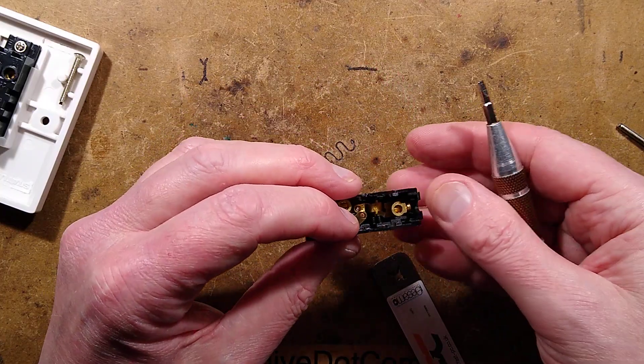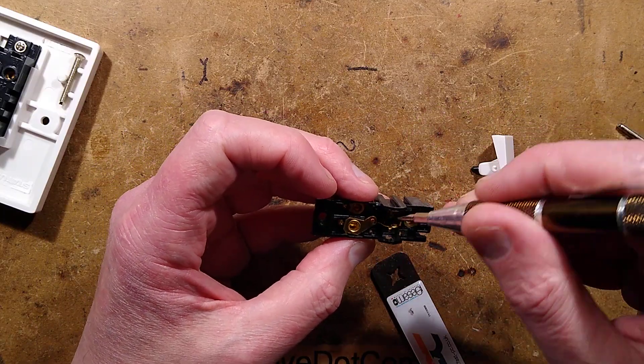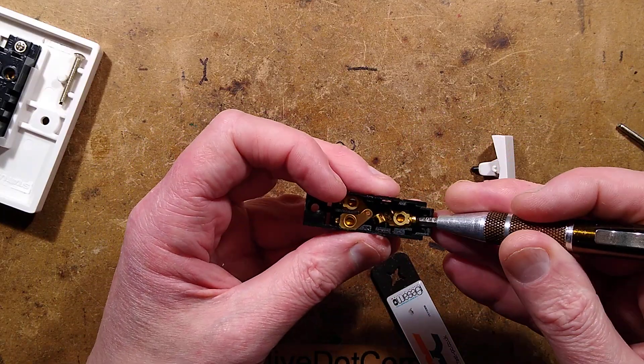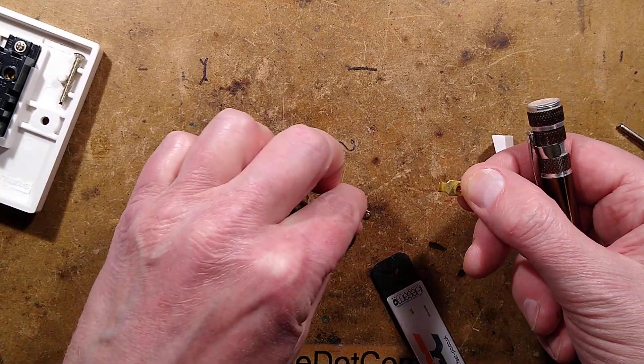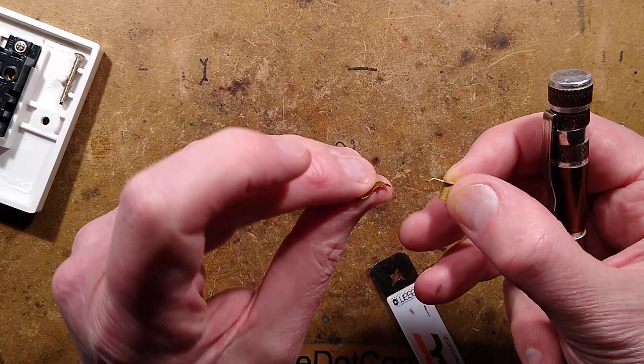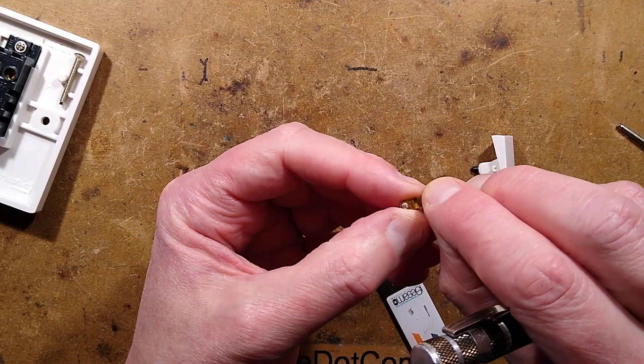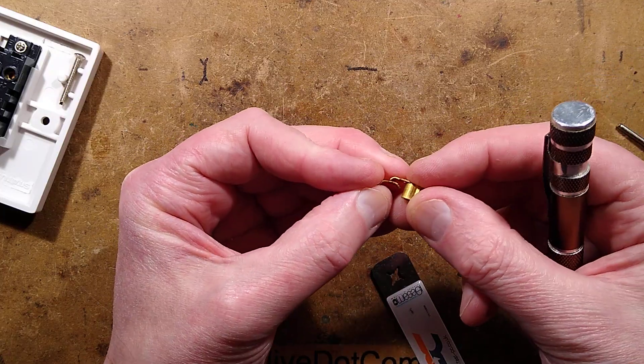We've got the common contact at this end and then we've got a rocking contact. Let's see if I can get this out. We've got the rocking contact which has a contact stud on both sides. Now it sits into a little housing in here that has a pivot.